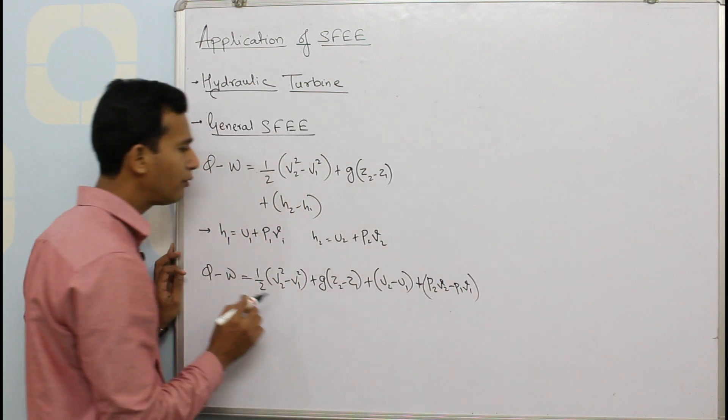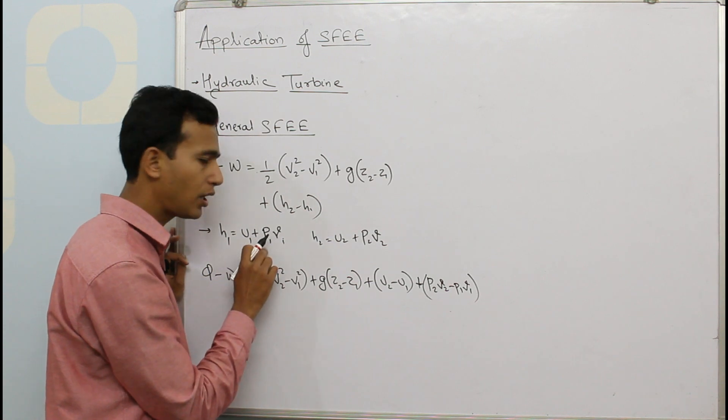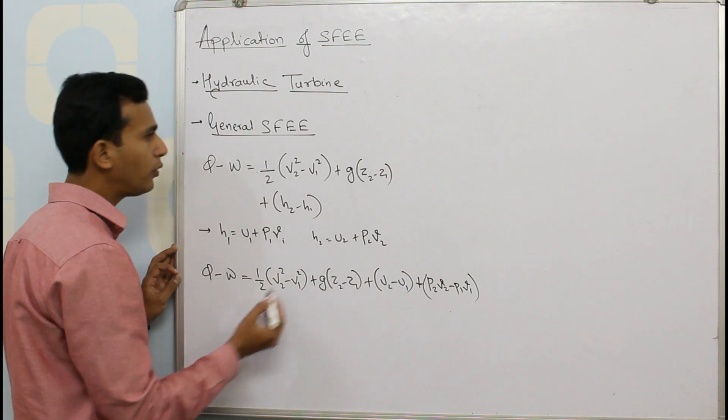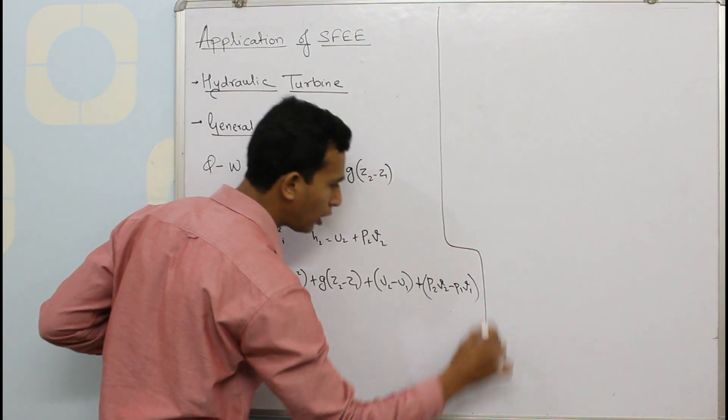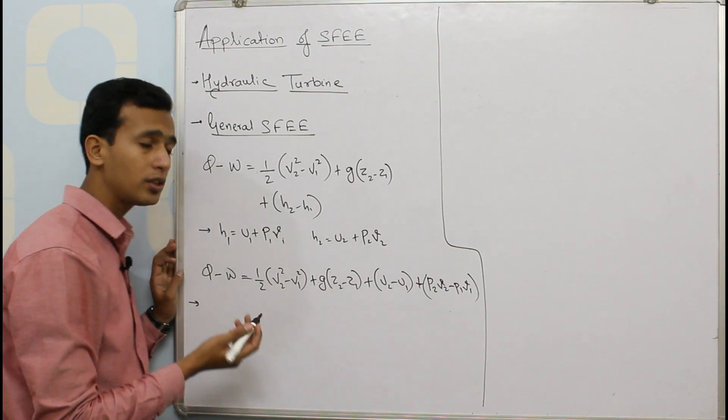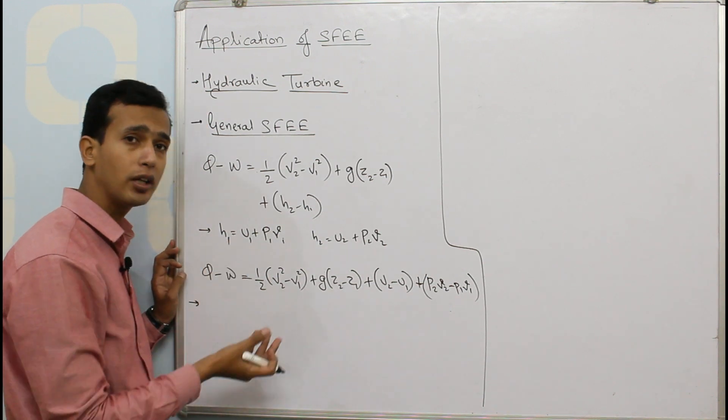So this I have written in terms of internal energy and product of pressure and specific volume. Now why I did so? In order to understand the derivation for a hydraulic turbine we need to understand the various factors which are going to be present in the steady flow energy equation.